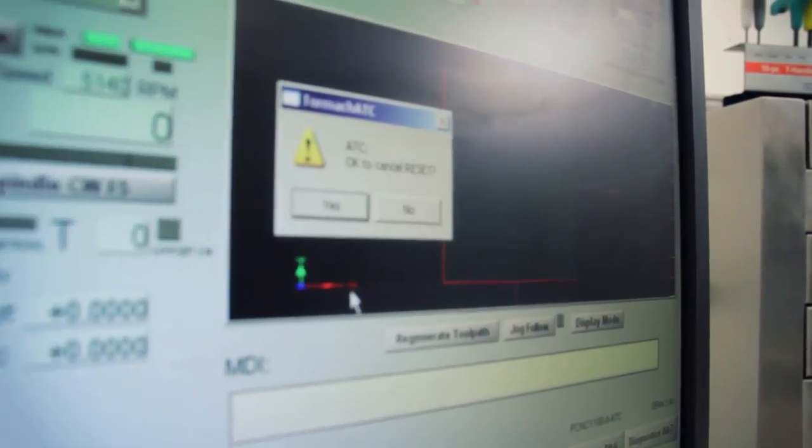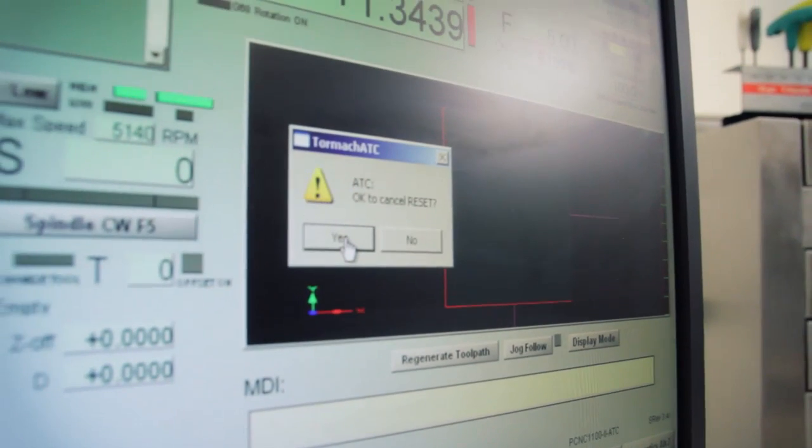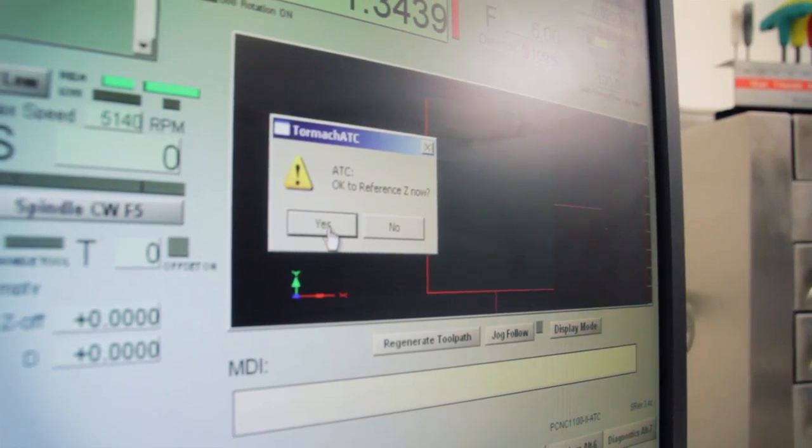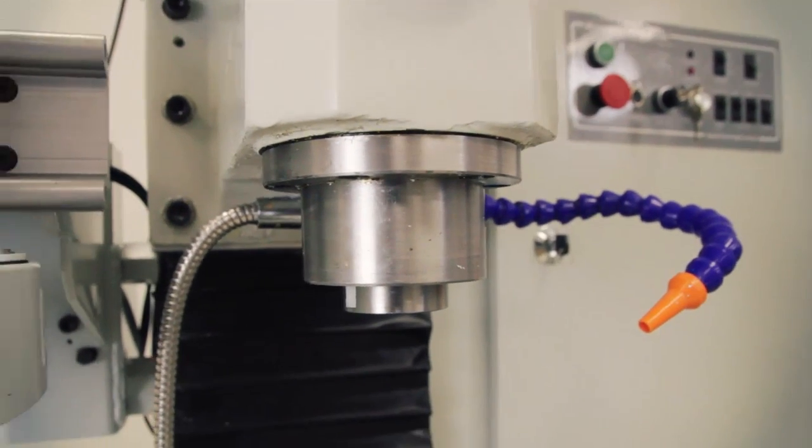You're presented with a message asking if it's okay to cancel reset, yes, and whether it's okay to reference Z. We're now going to walk through the fine tuning of the alignment of the ATC, so I'll go to the ATC setup screen on the control software.